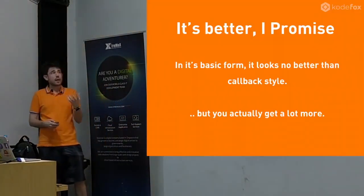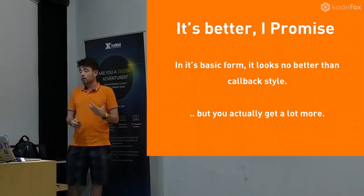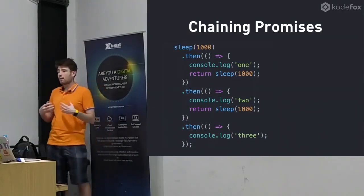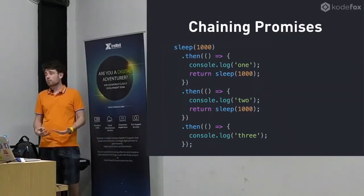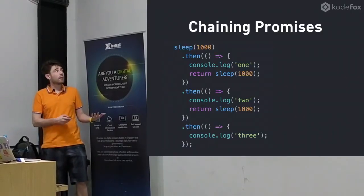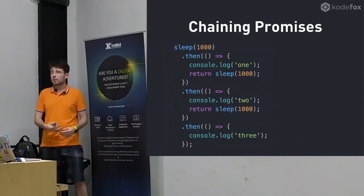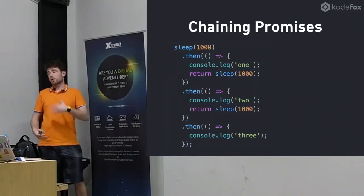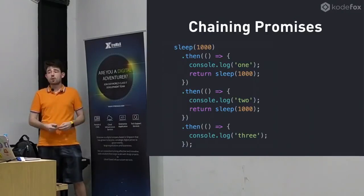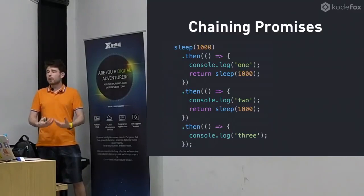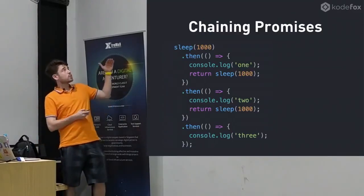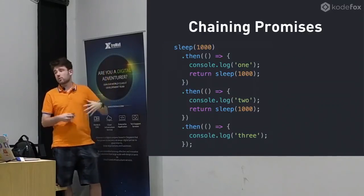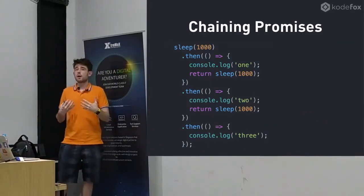It's better than callbacks - it may not seem so at first, but it is better. Here's a simple function that uses setTimeout - it just waits 1,000 milliseconds and then fulfills the promise. It's the same idea as setTimeout but in promise world. The idea is we want to wait one second and log something, wait another second and log another thing. We get a more readable pattern - at least we can see: first we sleep, then we do this thing, then this other thing, and lastly this final thing. It reads in a very sequential order.